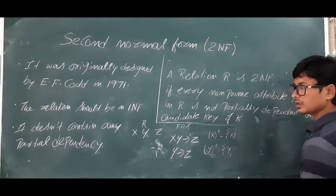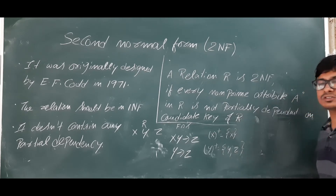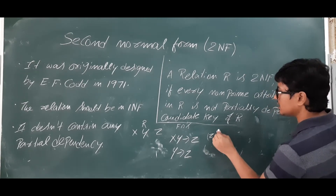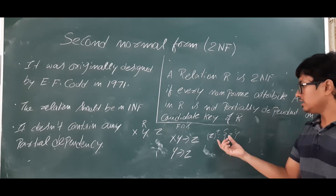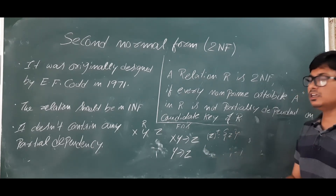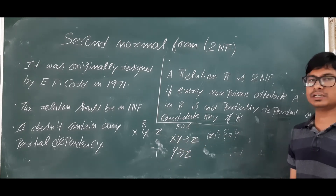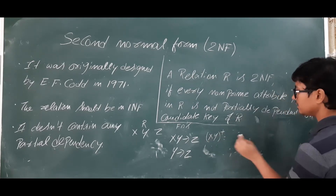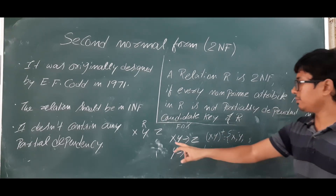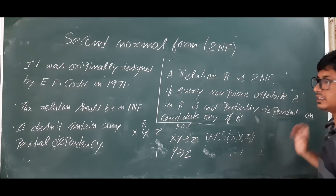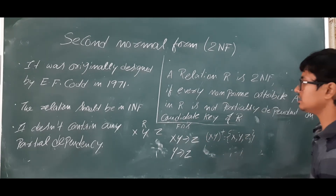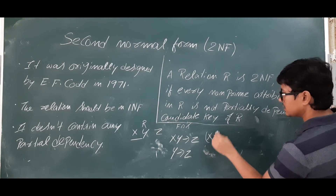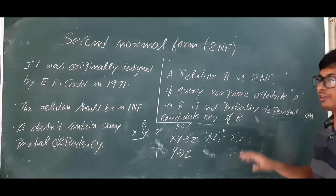Y-closure gives Y and Z but not X, so Y is not a candidate key. Z-closure gives only Z, so Z is not a candidate key either. None of X, Y, Z alone are candidate keys. Now checking length-two combinations: XY-closure gives X, Y, and Z — all attributes in the relation R. So I can say that XY is a candidate key.